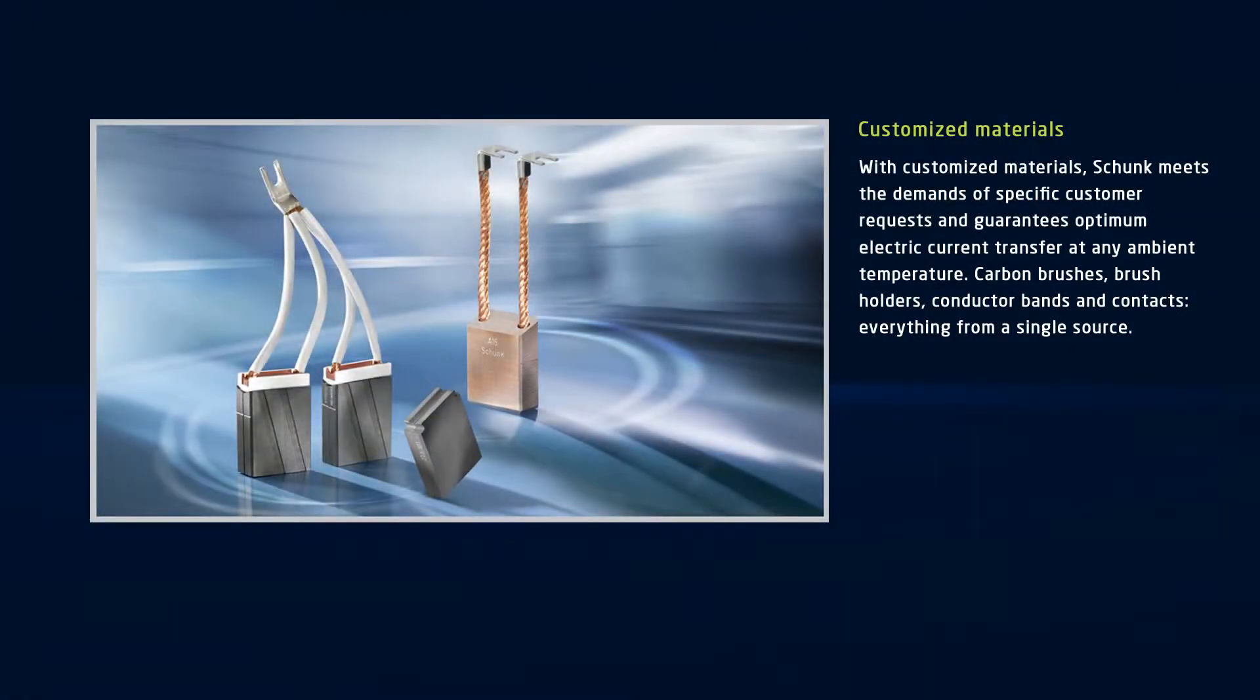In the production of its carbon brushes, Shunk uses customized materials based on carbon. The company sees its customers as close partners and meets a wide variety of requirements perfectly. From carbon brushes and brush holders to conductor bands and contacts, Shunk offers top quality from a single source.